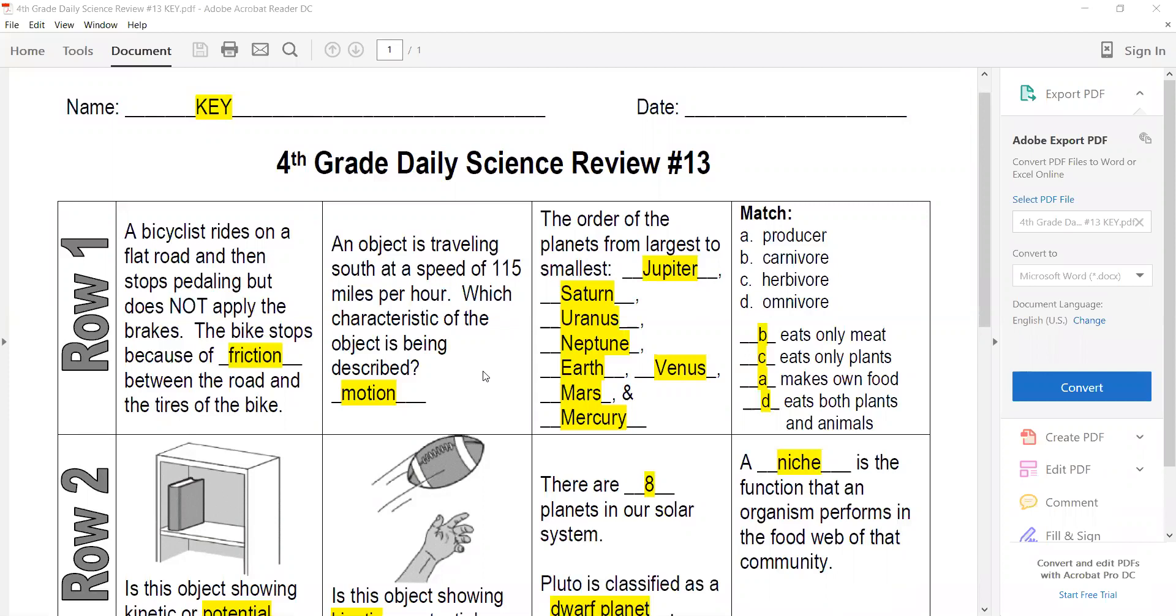An object is traveling south at a speed of 115 miles per hour - that's pretty fast. What would we describe that as? Well, it's motion. In order from largest to smallest: Jupiter, Saturn, Uranus, Neptune, Earth, Venus, Mars, and Mercury.